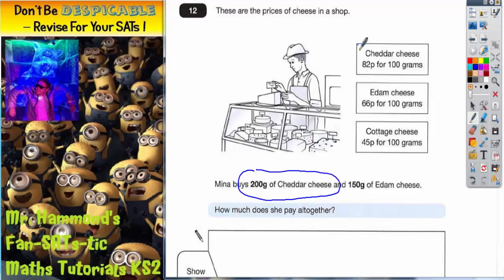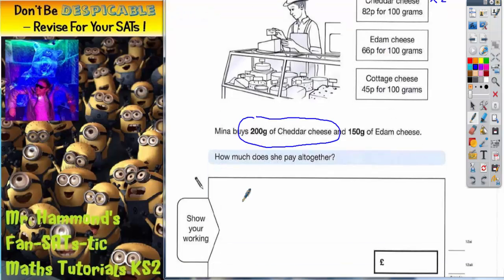Let's look at the cheddar cheese. 82p for 100 grams, but we want 200 grams, which is double the weight. If we want double the weight, we're going to have to double the price. So in my working out space, I've got 82 pence and I want to double it, so that's times by 2.